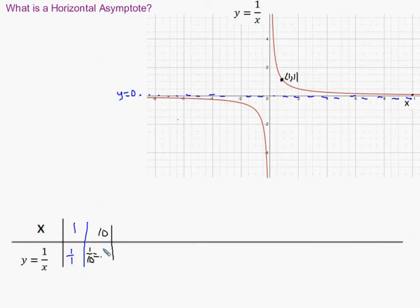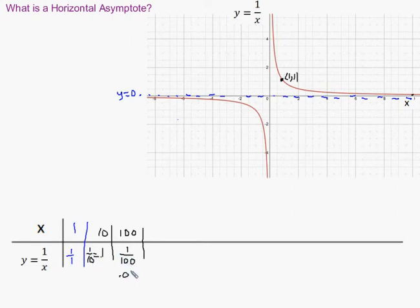This pattern just continues. The larger the x value, the larger the denominator. When x equals 100, the denominator is now 100, so instead of one over one or one over ten, now it's one over 100, which is 0.01. The larger the x value, the larger the denominator, and in mathematics, a very large denominator makes the fraction itself smaller. So the larger you make x, the smaller the y value you'll get.